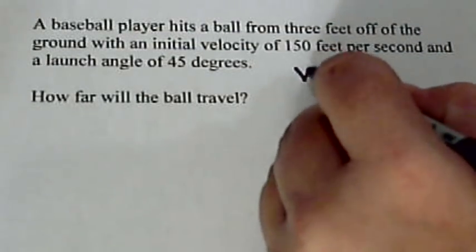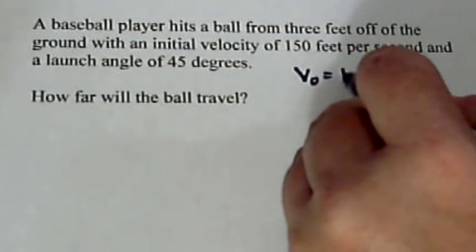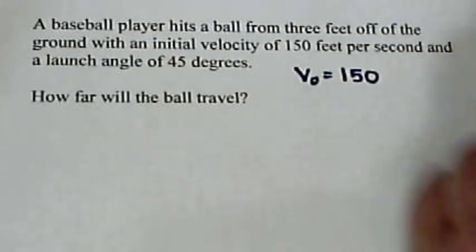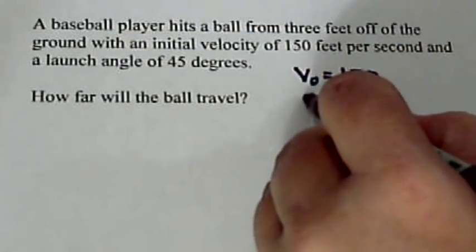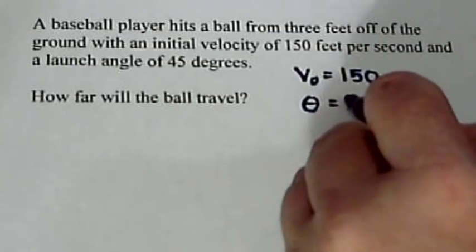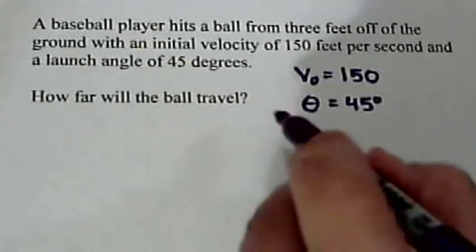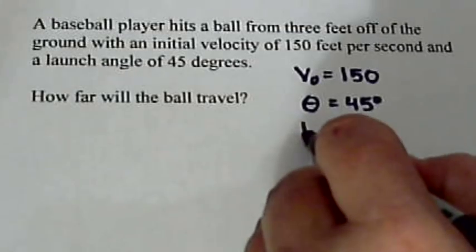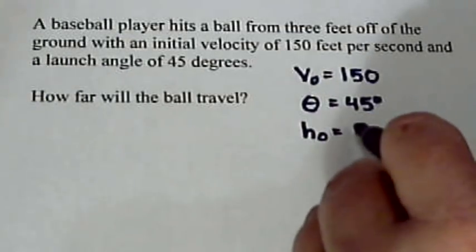So we've got our initial velocity, V0, 150 feet per second, we've got theta being 45 degrees, and we've got H0 being 3.